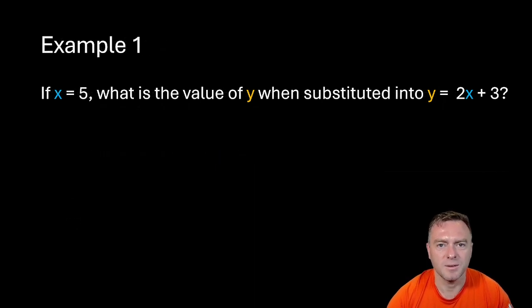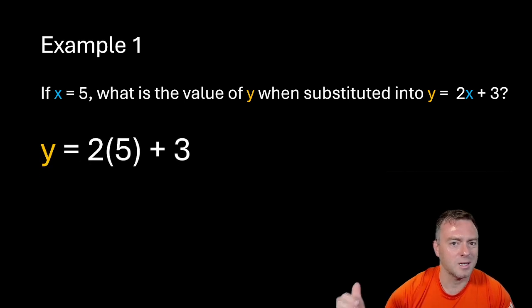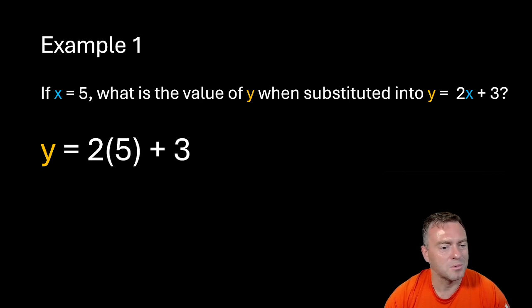So here's another example. If x is equal to 5 and y was equal to 2x plus 3, we'd substitute in the 5 where we saw the x. So for this I would write brackets and then inject the 5 into where the x was. So then now we've just got a simple equation. So we do 2 times 5 plus the 3.